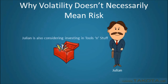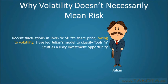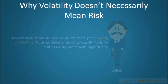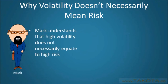Julian is also considering investing in Tools & Stuff. However, Julian relies on a volatility-based financial model to determine the so-called risk of an investment opportunity before buying it. Recent fluctuations in Tools & Stuff share price, owing to volatility, have led Julian's model to classify Tools & Stuff as a risky investment opportunity. With all of this in mind, let's see how things turn out for Mark and Julian.